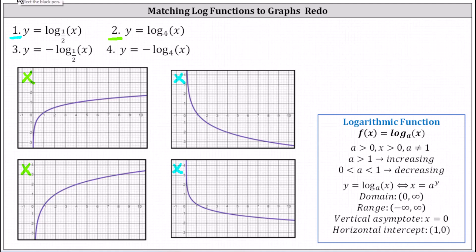Starting with number one, we'll use the equation y equals log base one half of x and use a table of values to find one or two points on the graph, then see which graph from the second column contains those points. To find the points, we'll write the equivalent exponential equation, which is one half to the power of y equals x.